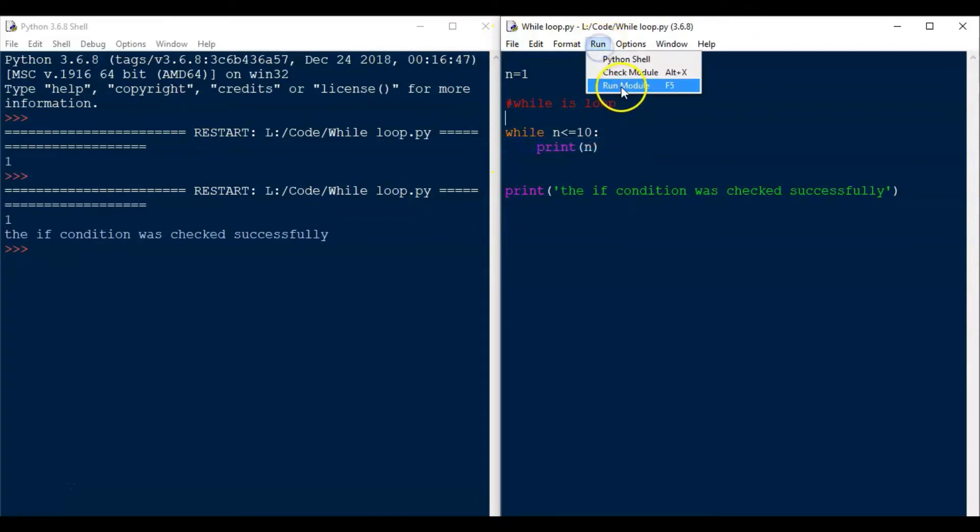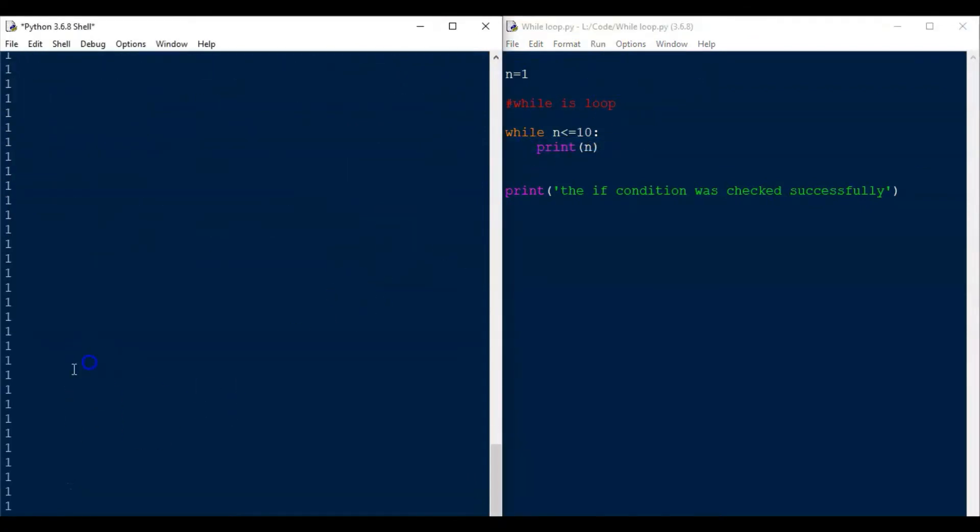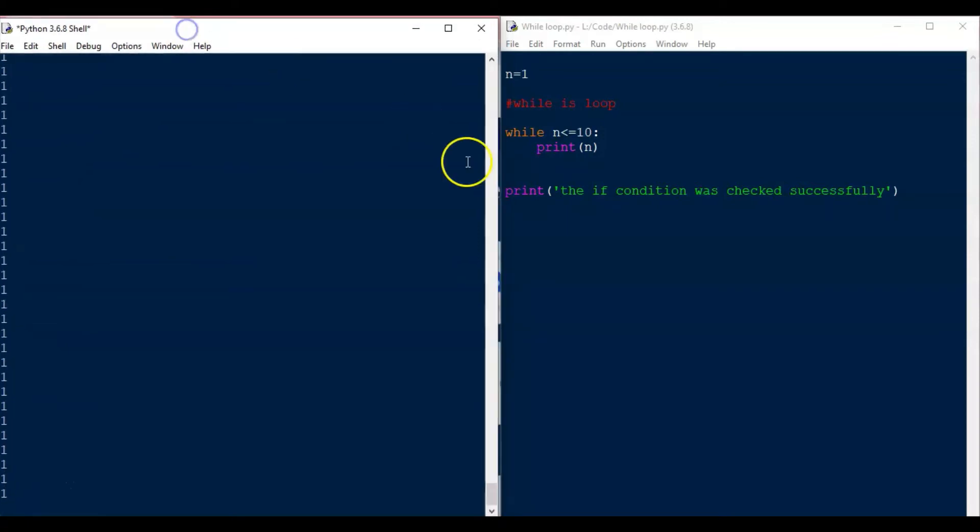You can see that we have written only one print statement but it is printing the count again and again. For if, it printed only once but now it is printing again and again because it is running in a loop. How is this loop happening? Let me explain in detail.